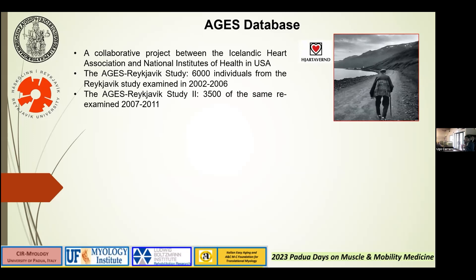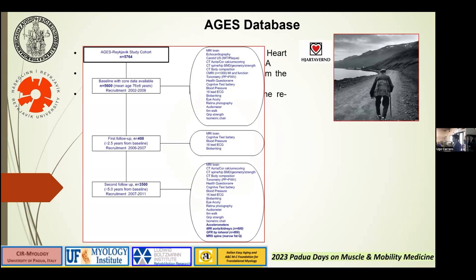This approach was then tested on a large database — the AGES database — born from a collaboration between the Icelandic Heart Association and the National Institute of Health in the USA. Six thousand subjects were acquired between 2002 and 2006, with more than 10,000 variables. Five years later, the same 3,500 patients from the original 6,000 were re-examined, giving us data at time zero and at five years.